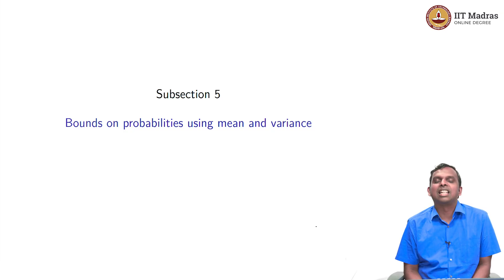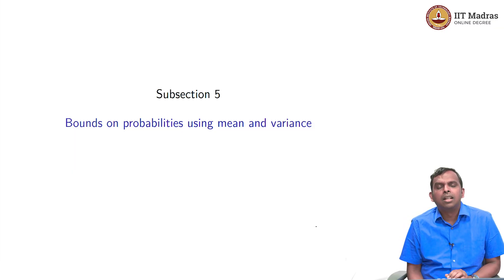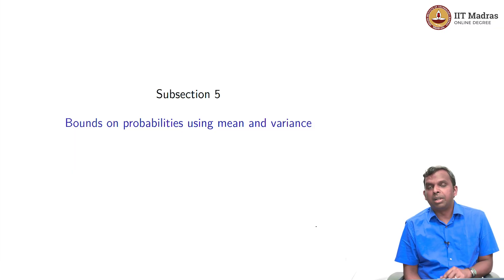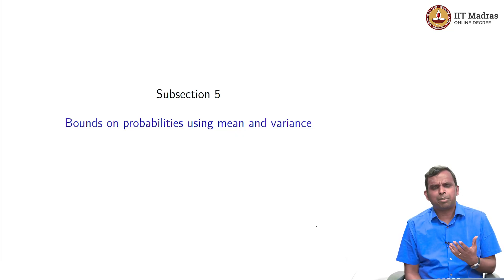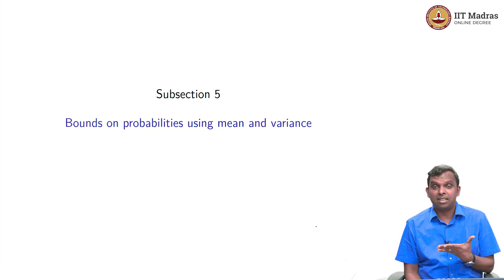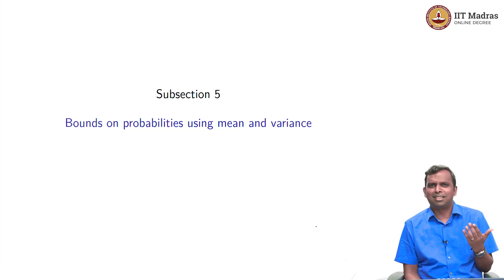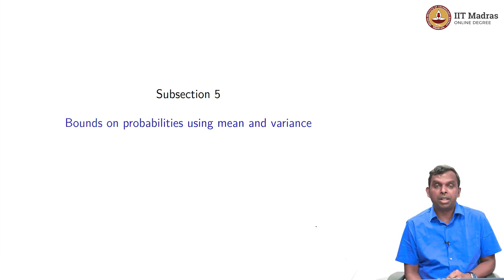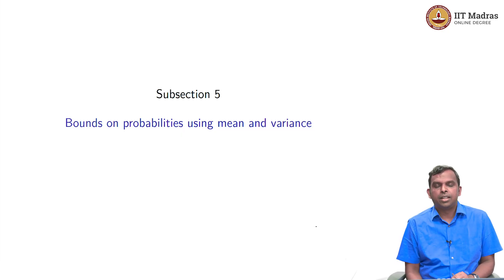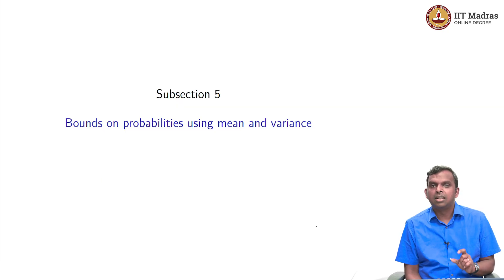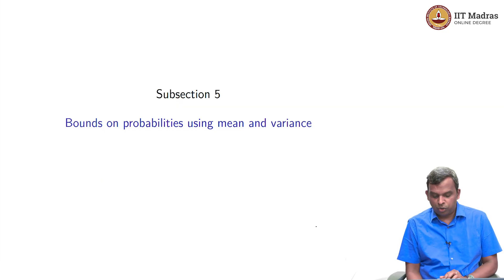Hello and welcome to this lecture. This lecture is on a very interesting topic of bounds on probabilities, or inequalities in probabilities, using mean and variance. We saw before that mean represents some sort of a center of the distribution and variance represents some sort of a spread. Can we say something more precise? Is there some precise connection to probability? It turns out not exactly, but we can get some good bounds on probabilities using mean and variance. This short lecture is about two such bounds and those bounds are very powerful and very useful.